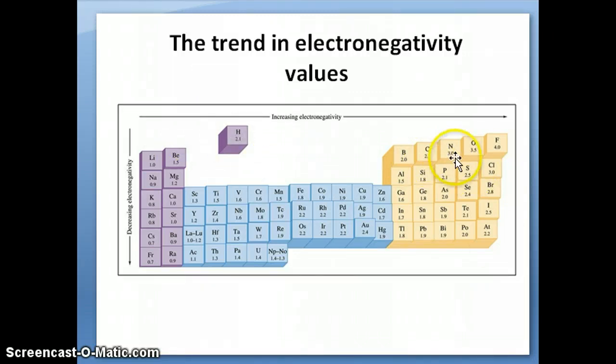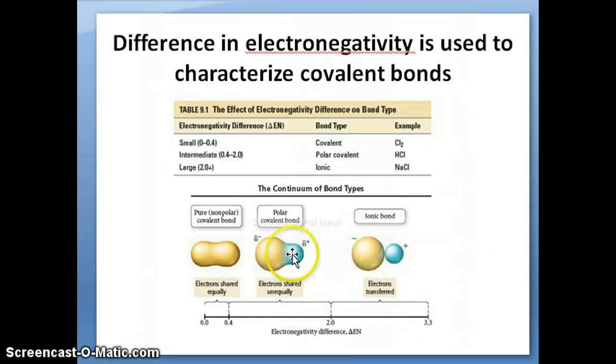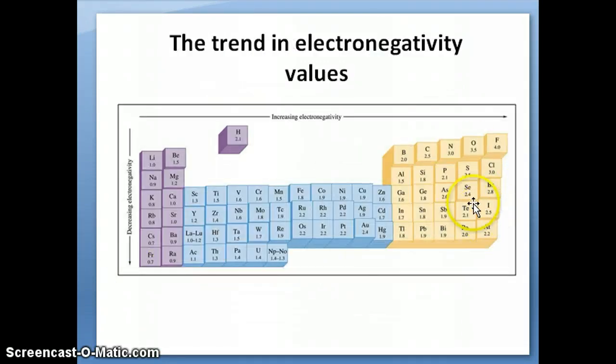However, something like an NH bond, nitrogen and hydrogen, nitrogen has an electronegativity of 3.0, hydrogen has an electronegativity of 2.1. The difference is now 0.9. 0.9 means that you're now in this region. So that's considered a polar bond.